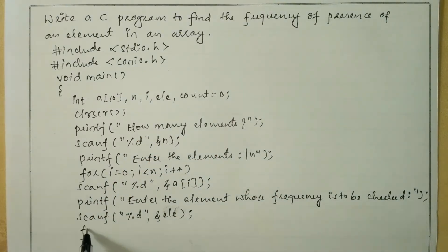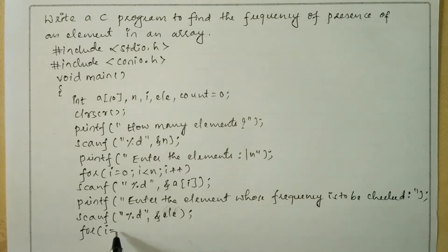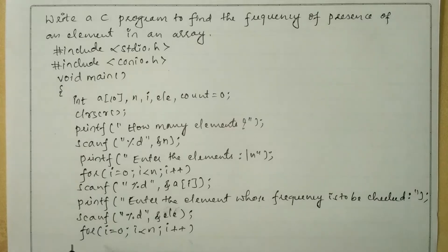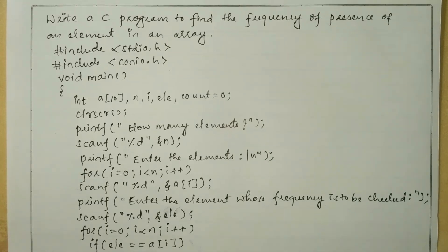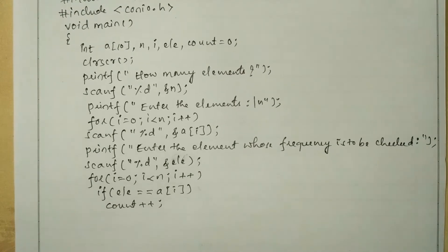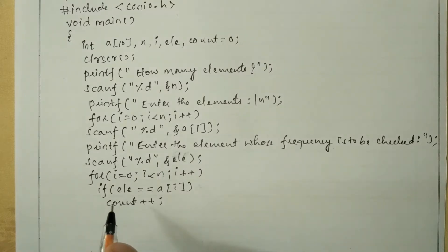Now we are going to iterate through the entire array from the first to the last element. So for i=0, i less than n, i++. Here we check the condition: if the entered element is equal to a[i], then count++ — if this is true then the count increments its value.